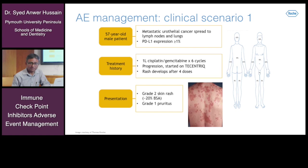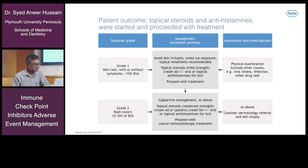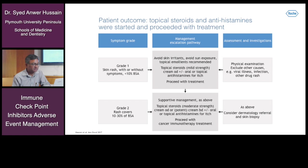The patient presented with grade 2 skin rash over 20 percent of body surface area with grade 1 pruritus. Topical steroids and antihistamines were started and treatment was proceeded. For grade 1 skin rash without symptoms and less than 10 percent body surface area: avoid skin irritants, avoid sun exposure, and topical emollients are recommended. Topical steroids of mild strength with oral or topical antihistamines for itching can be used, and you can proceed with treatment. Assessment is key — physical examination should exclude other causes like viral illness, infection, or any other drug rash.